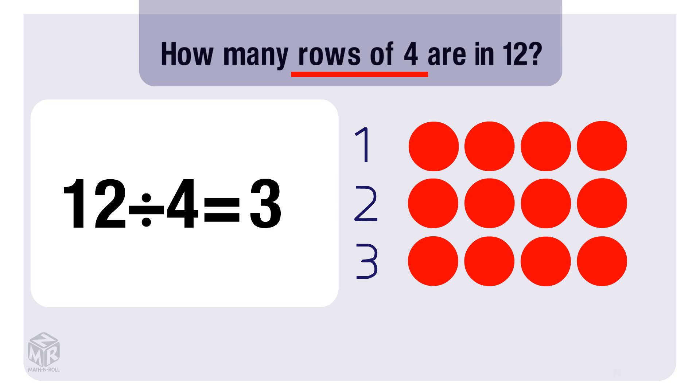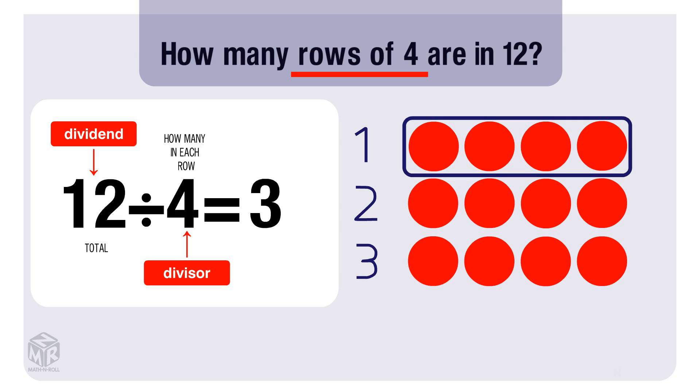In this division sentence, 12 is our dividend and our total. 4 is our divisor and how many counters we have in each row. 3 is our quotient, and it tells us how many rows we have.